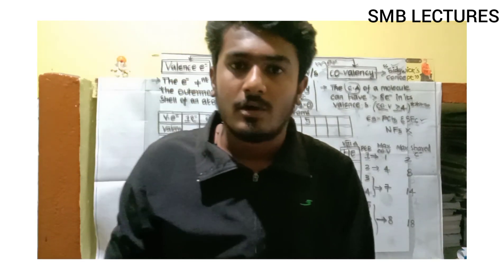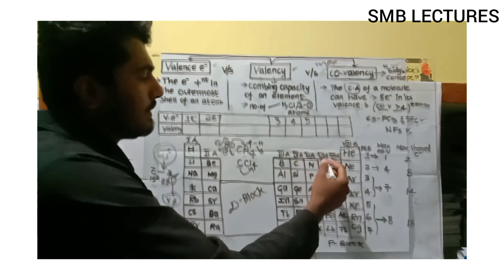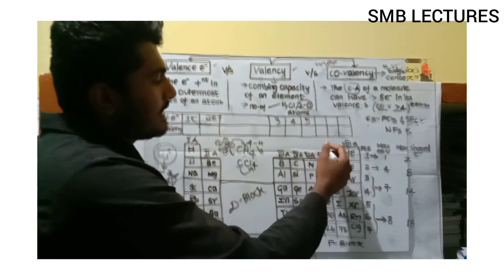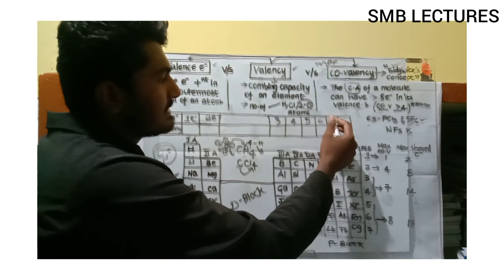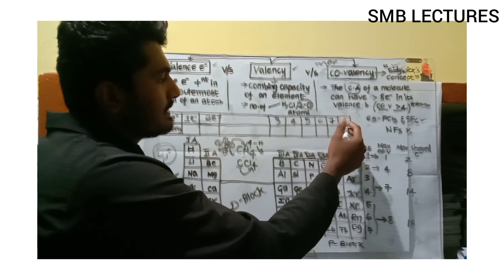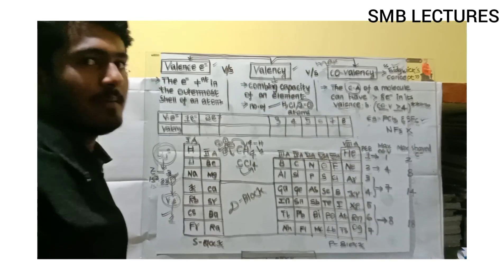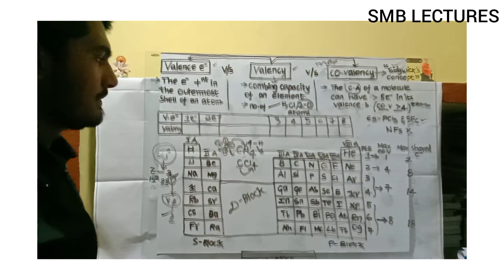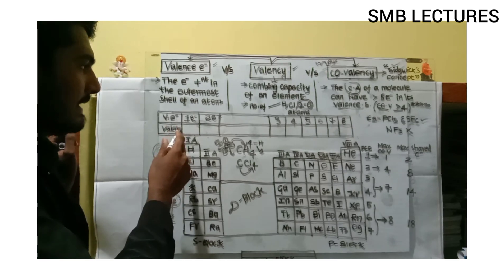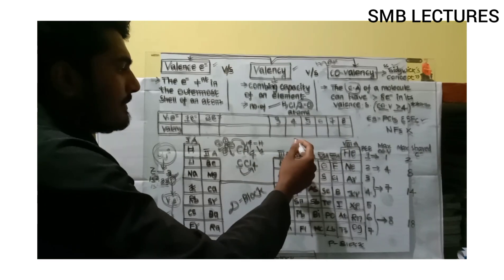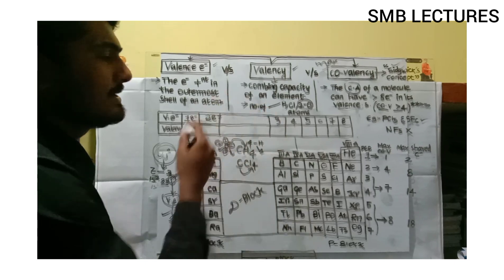The valence electrons in group 6 is six, in group 7 is seven, and in group 8 is eight. Now when we look at covalency, till the carbon family it is the same as the number of valence electrons.